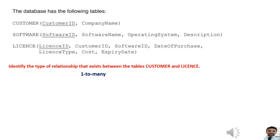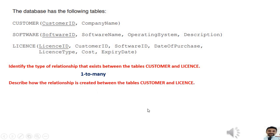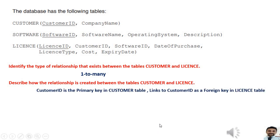We can decide that customer and license has a one-to-many relationship because when you have a one-to-many relationship, the one side's primary key should be placed inside the many-side table. Another question: describe how the relationship is created between the tables customer and license. Customer ID is the primary key in the customer table and links to customer ID as a foreign key in the license table. We have to have a primary and foreign key to create the relationship between the tables.